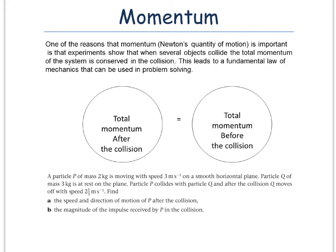Momentum and collision. One of the reasons that momentum, Newton's quantity of motion, is important is that experiments show that when several objects collide, the total momentum of the system is conserved in the collision. This leads to a fundamental law of mechanics that can be used in problem solving. The total momentum after the collision is equal to the total momentum before the collision.